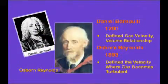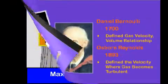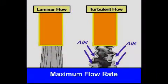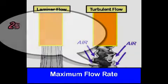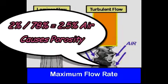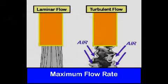Two pioneers who developed our understanding of how gases behave — Bernoulli and Reynolds — are introduced. Turbulent gas flow causes air to be pulled into the shielding gas stream. Air is 78% nitrogen, and it takes less than 2% nitrogen to cause internal weld porosity. Mixing just 2.5% air in the shielding gas stream is all that is needed to create problems.